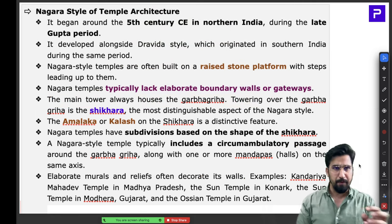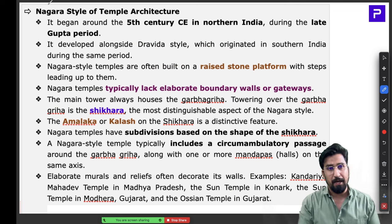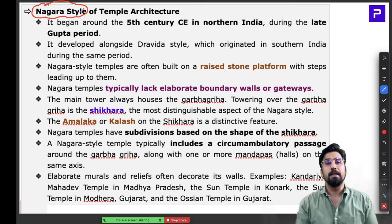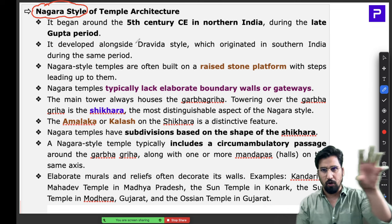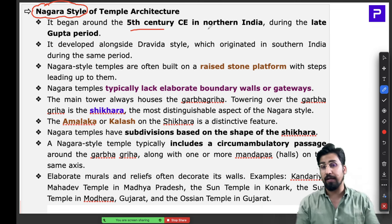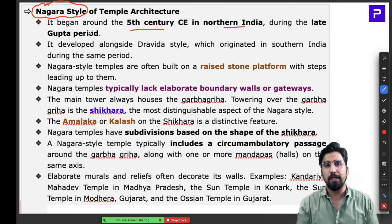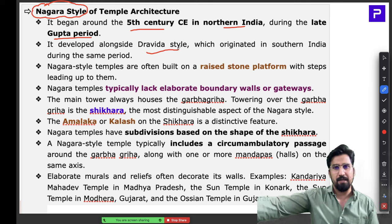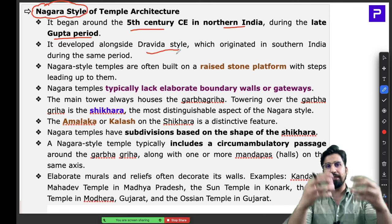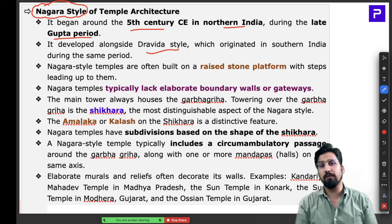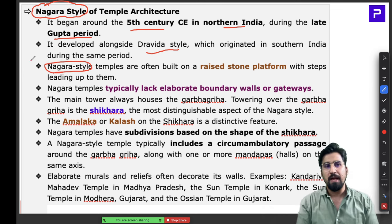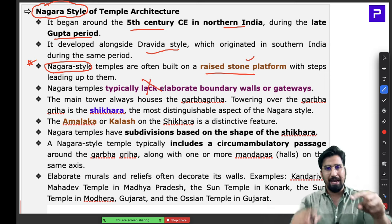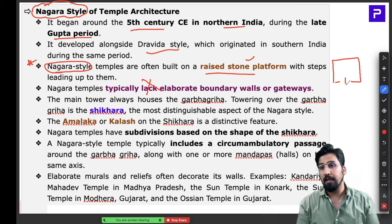To give you a bit more information on the Nagara style — it's likely to be asked in some form in the upcoming Prelims. The Nagara style temple in northern India started around the 5th century AD, evolving especially during the later Gupta period. At the same time, the Dravidian style was also developing in the south. Key USP of the Nagara style: it is always on a raised stone platform, with no elaborate boundary walls or gateways — that concept belongs more to the Dravida style.